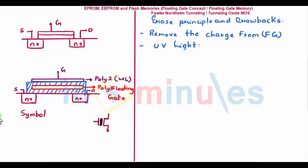Once the charge is released, the transistor behaves like a normal transistor with no charge on the floating gate, and you can turn it on with the normal threshold voltage. In summary, removing the chip and exposing it to UV light through the glass window causes the UV light to increase the conductivity of the silicon dioxide surrounding the floating gate, causing it to lose its trapped charge.